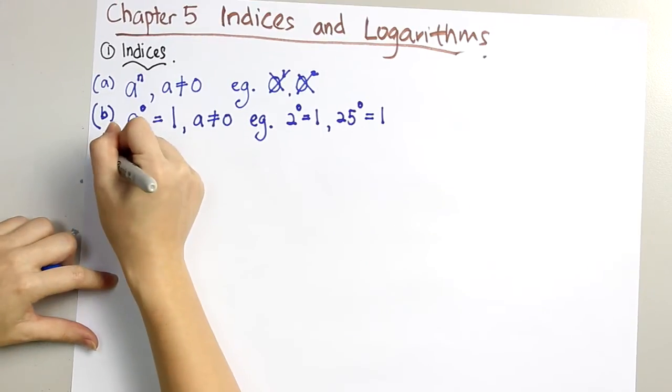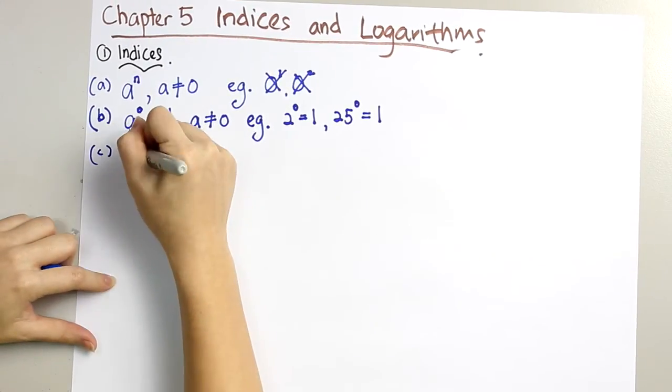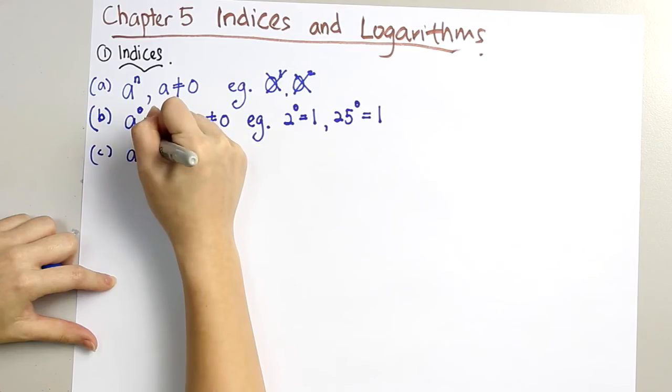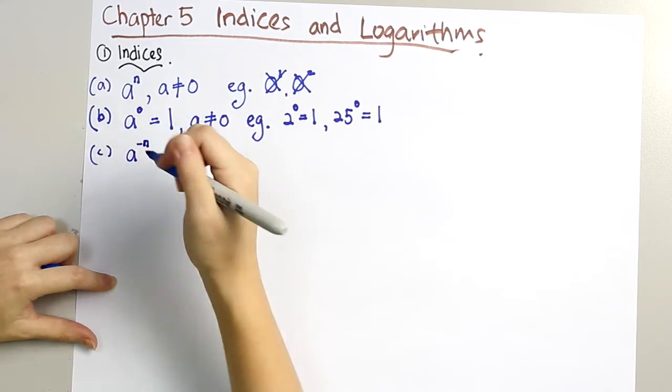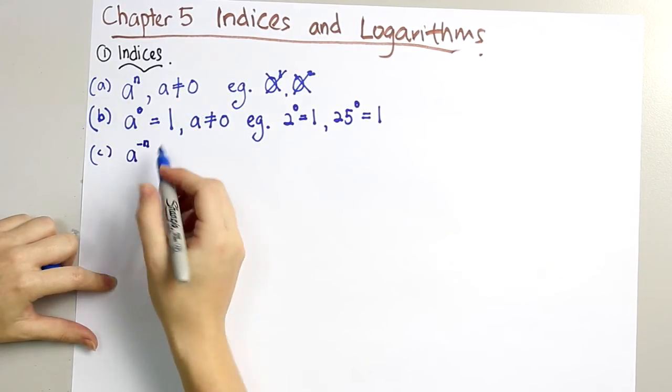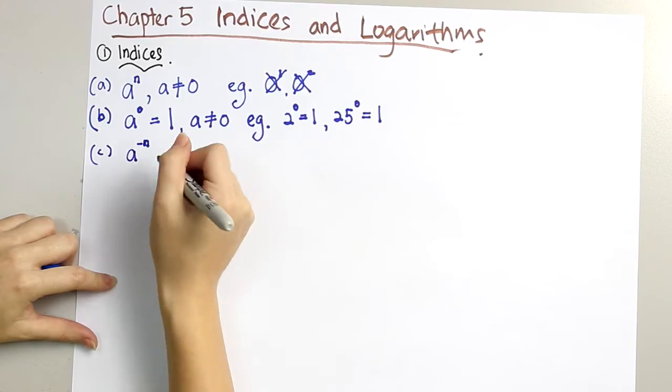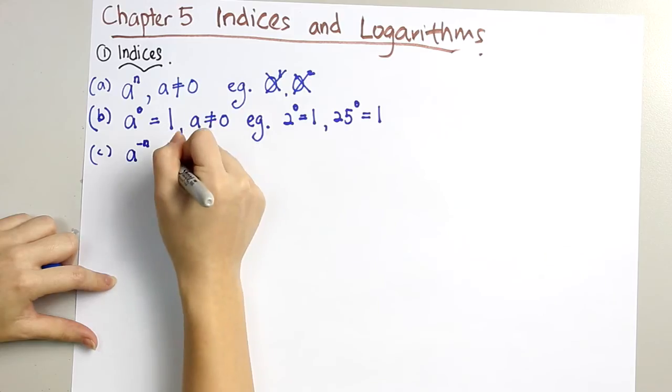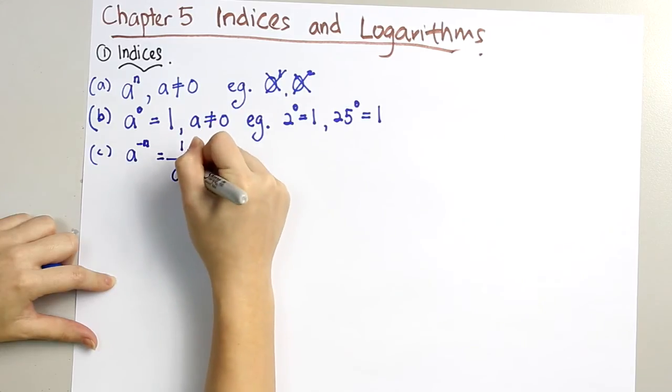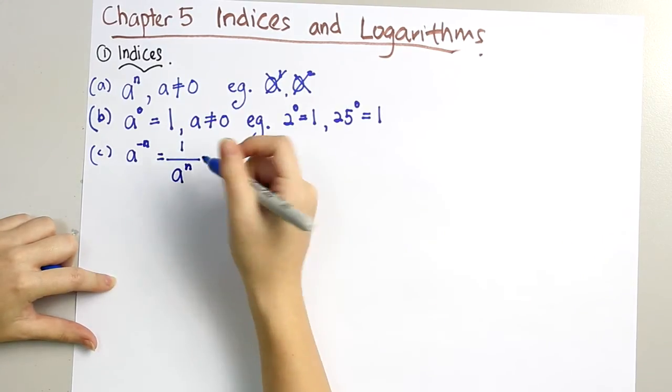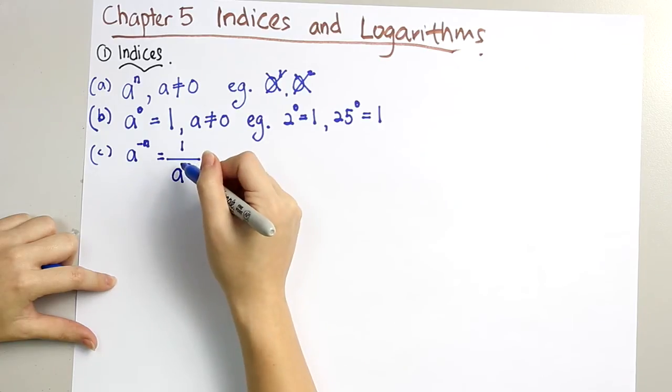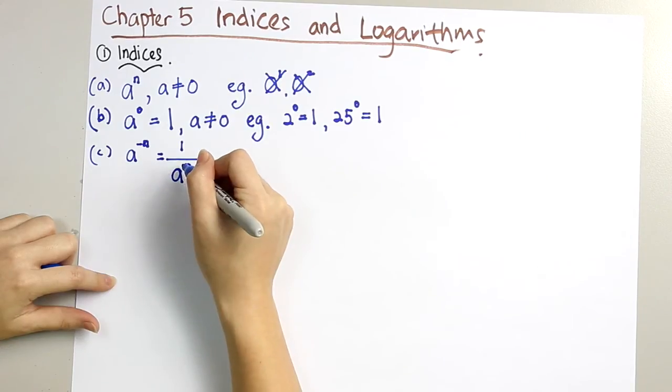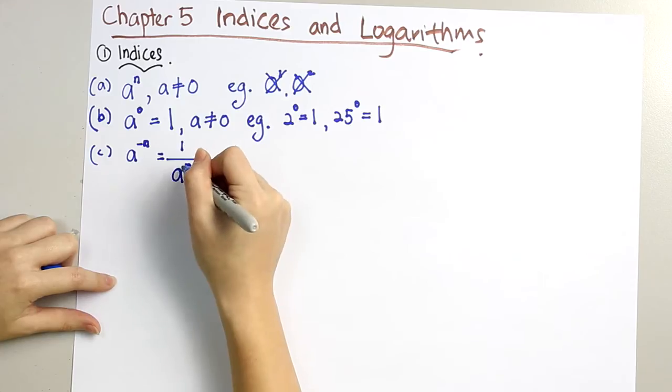We'll then go to a to the power of negative n. When a is to the power of negative n, when the power is in negative form, we can convert it into 1 over a to the power of n. In this case, when it is as the numerator, the negative sign doesn't have to be there for the power already.